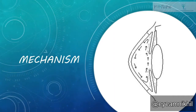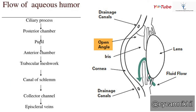The Mechanism. The aqueous humor is secreted by the ciliary body into the posterior chamber, from where it flows into the anterior chamber through the pupillary area. Then it is drained from the trabecular meshwork into Schlemm's canal, ultimately reaching the episcleral veins.